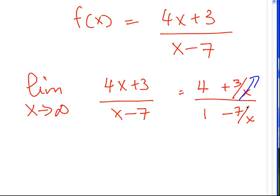They become 0. So, we have 4 plus 0 over 1 minus 0. And that just works out to be 4.